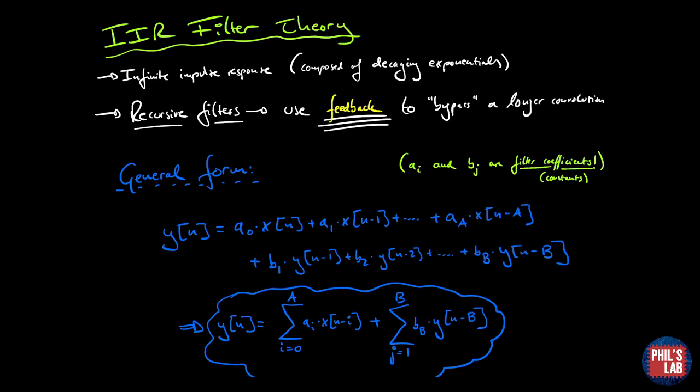Now let's look at some IIR filter theory. IIR stands for infinite impulse response. Essentially the impulse response is composed of decaying exponentials. IIR filters are sometimes also called recursive filters because they use feedback to bypass a longer convolution. If you remember for FIR filters we have to perform a pretty heavy convolution. IIR uses some of the output, feeds it back to compute the new sample so it can be much quicker or simpler to implement.